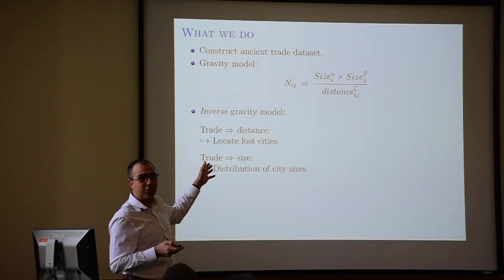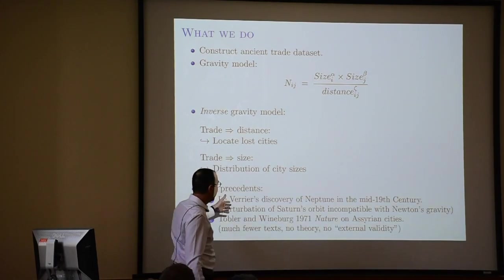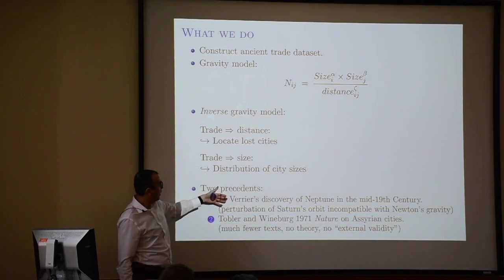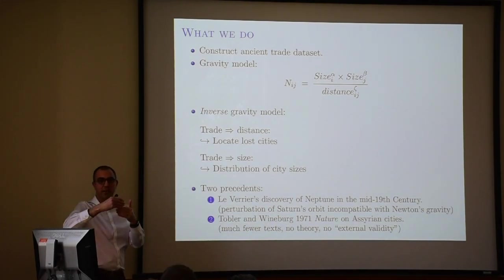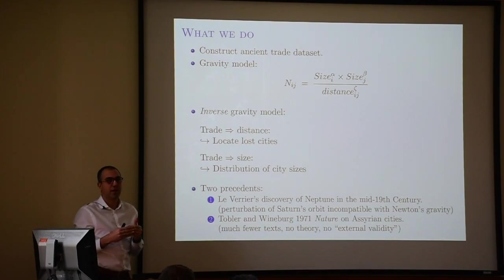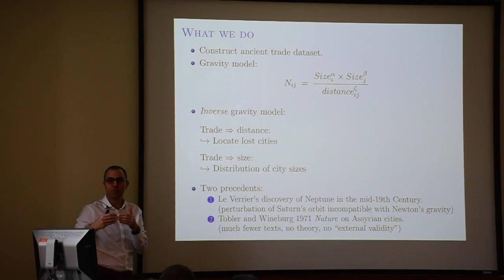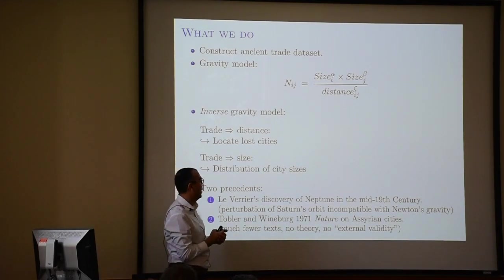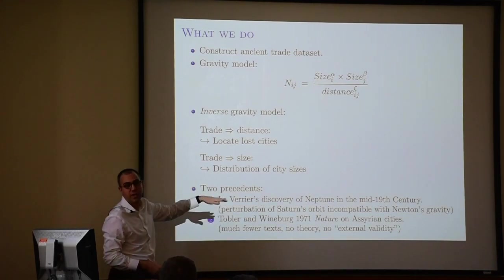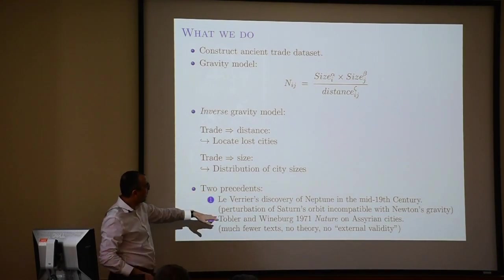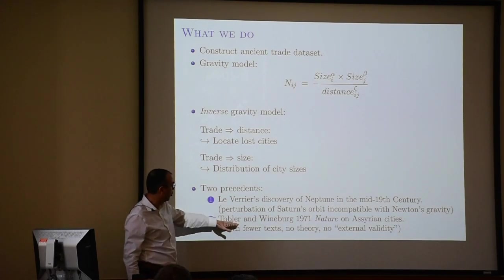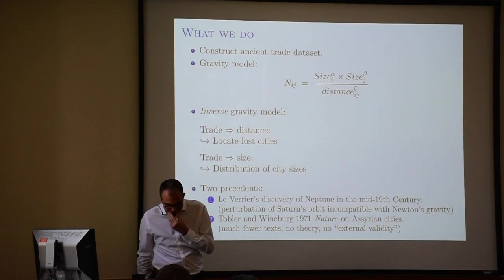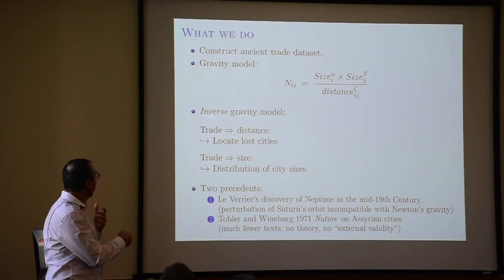There are two intellectual precedents to this exercise. One is from physics: a French astronomer observed a perturbation in Saturn's orbit. At that point, they didn't know the next planet, Neptune. He predicted where exactly Neptune should be and how large it should be, and when they had the means to observe it, they located Neptune exactly where he predicted — the discovery of Neptune with a strike of a pen. A more recent and directly related contribution is a 1971 Nature article by geographer Waldo Tobler and Weinberg, which is basically the same thing for this regard.